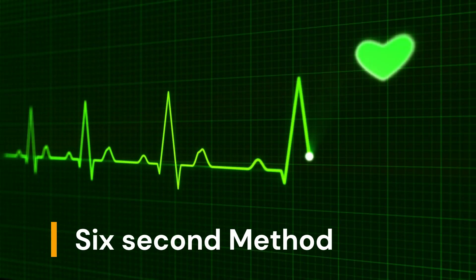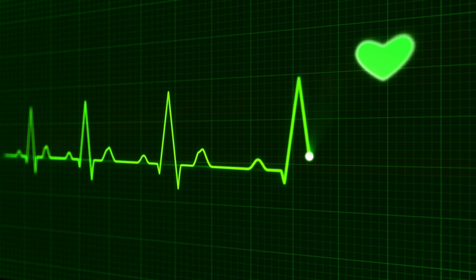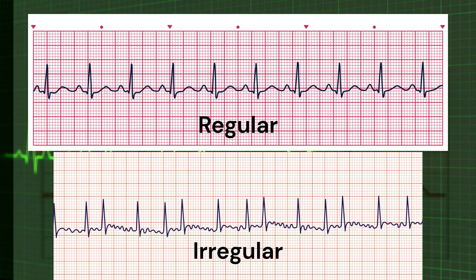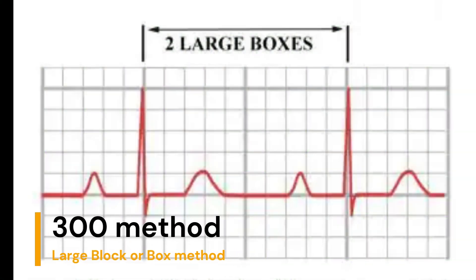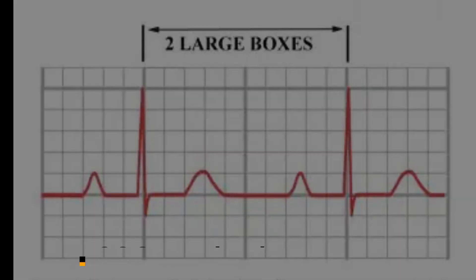The six-second method is quite advantageous compared to other methods of rate determination in that it can be utilized for both regular and irregular rhythms. The next method of determining the heart rate on an EKG strip is called the large block or box method, also known as the 300 method.